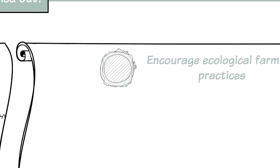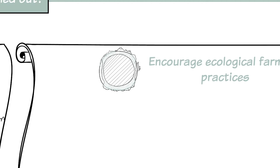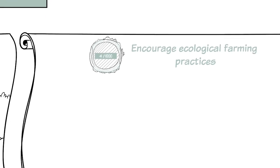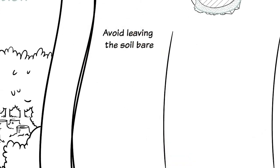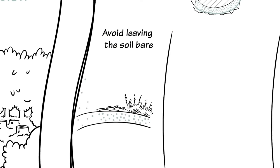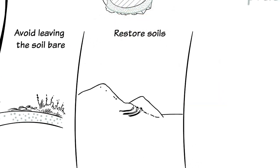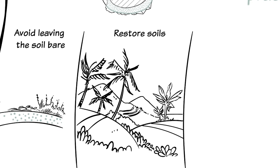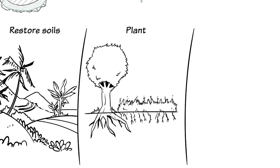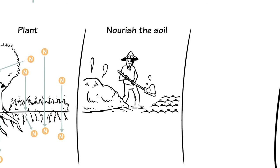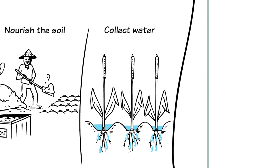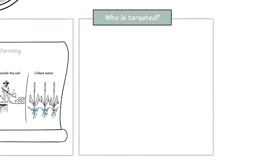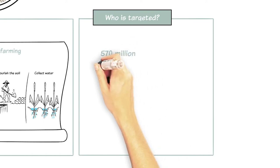Policy measures must be established to reduce deforestation and encourage ecological farming practices that boost the amount of organic matter in soils. Examples include: avoiding leaving the soil bare so as to limit carbon loss; restoring crops, pastures, and degraded forests; planting trees and legumes that fix atmospheric nitrogen in the soil; and using manure and composts to nourish the soil.